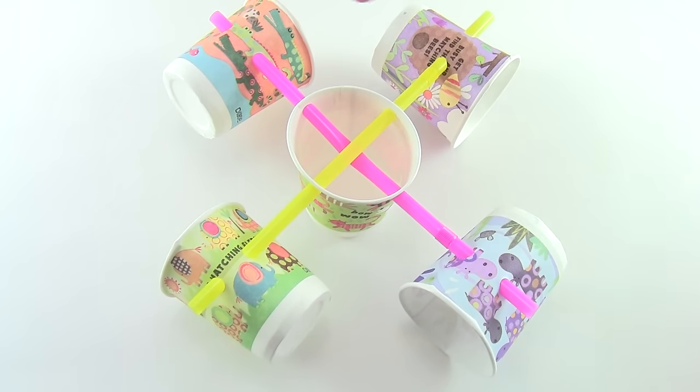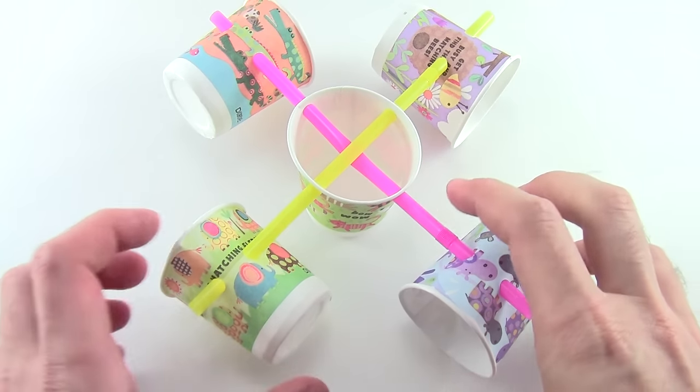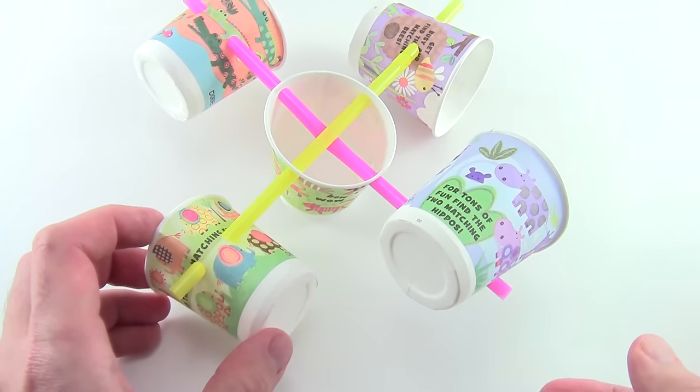Make sure the cups all face the same direction around a circle, meaning they all face clockwise or all counterclockwise. If one of the cups is backwards, then your anemometer will not work.